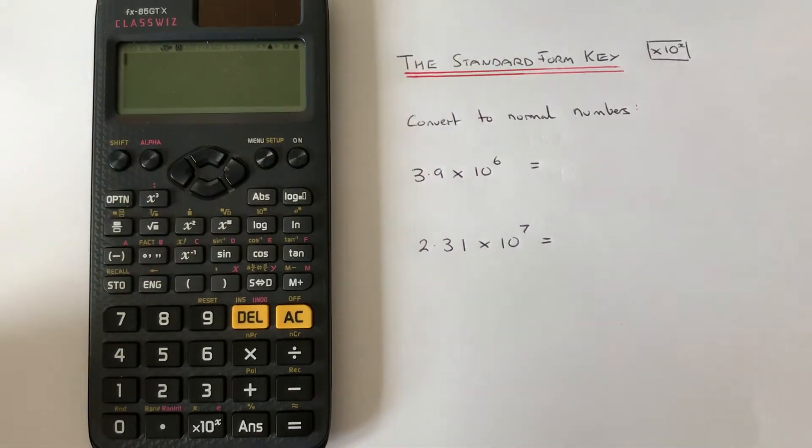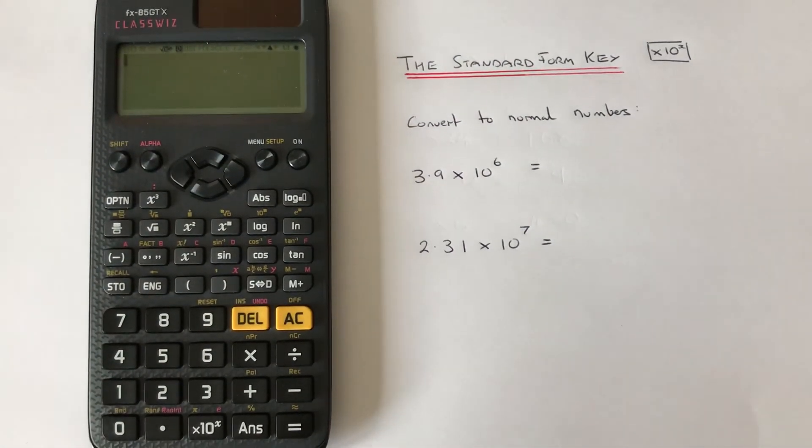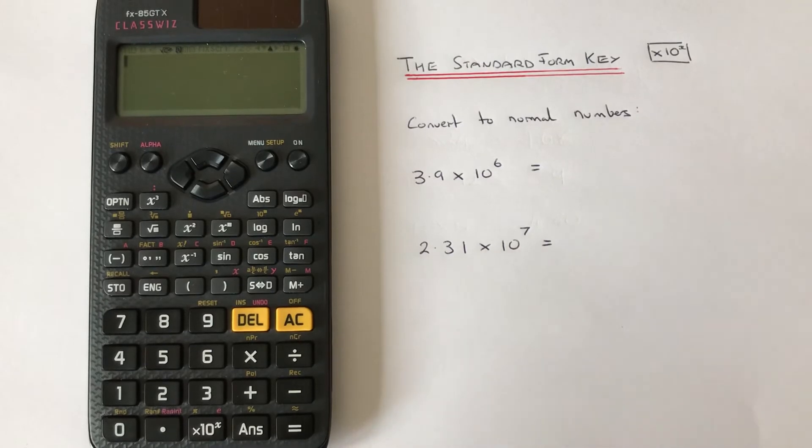Hi guys, welcome back. This is Maths 3000. I'm going to show you how to use the standard form key on a Casio Classwiz scientific calculator to convert a number in standard form into a normal number.